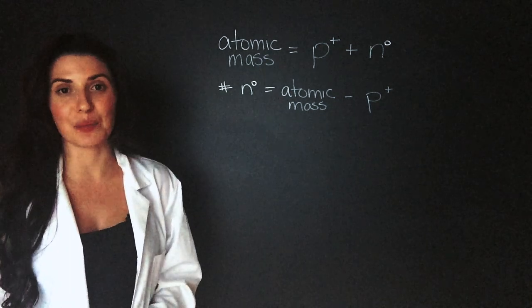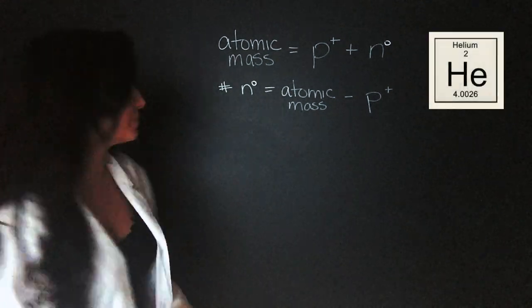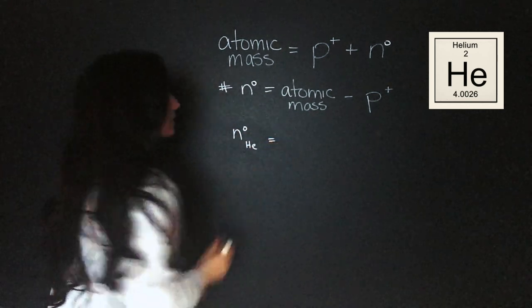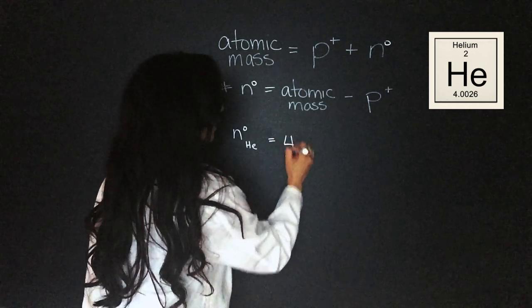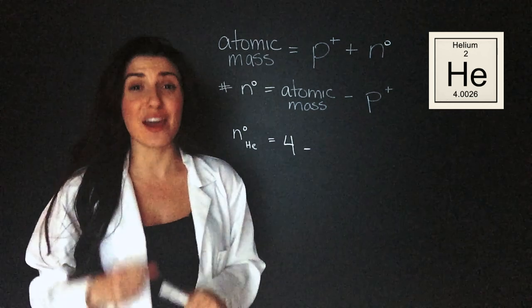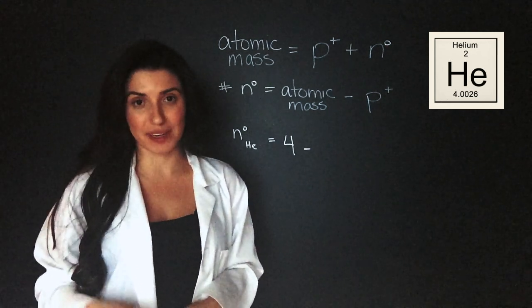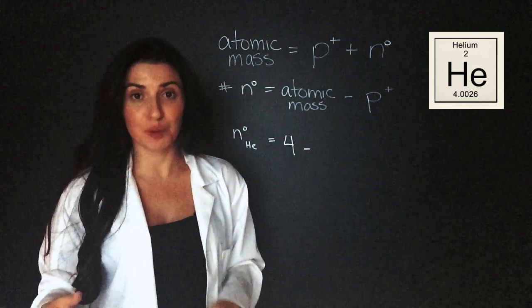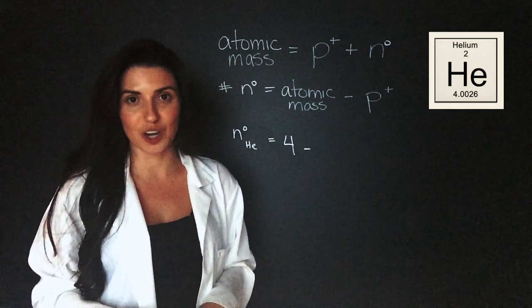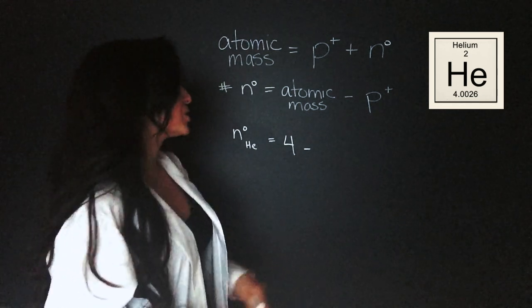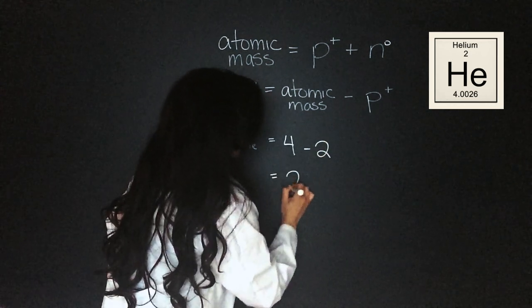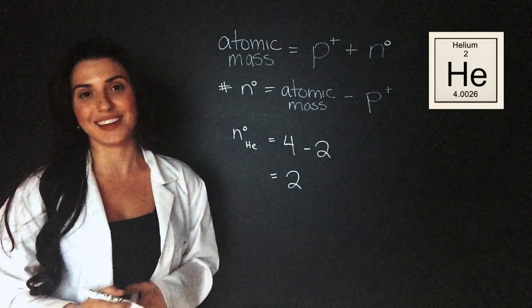Our first example is going to be a very easy element, helium. So, the neutrons in helium equals the atomic mass, which is 4, and the number of protons is the same as the atomic number. Remember that every element has its own atomic number and that atomic number relates to the number of protons. No other element on the periodic table can have that same number of protons. If it did, it would be another element. So, helium has two protons. So, that equals two. So, we know that there are two neutrons in helium.